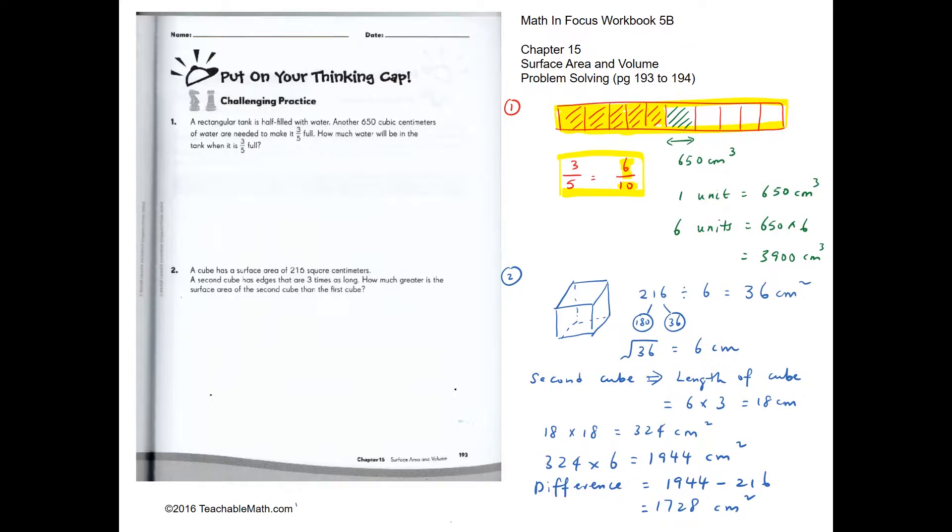For one additional unit, so that we can have it six-tenths full, we need an additional 650 cm cubed. So one unit will be 650 cm cubed. Six units will be times six. So the answer is 3,900.